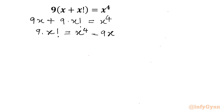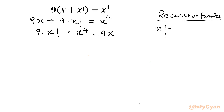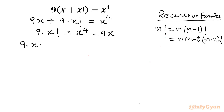Now I will use the recursive formula. The recursive formula states that n factorial can be written as n times (n minus 1) factorial, or n times (n minus 1) times (n minus 2) factorial, and so on. So I will write 9 times x times (x minus 1) factorial. Taking x common on the right side gives x times (x³ minus 9), and we can see x can be cancelled.